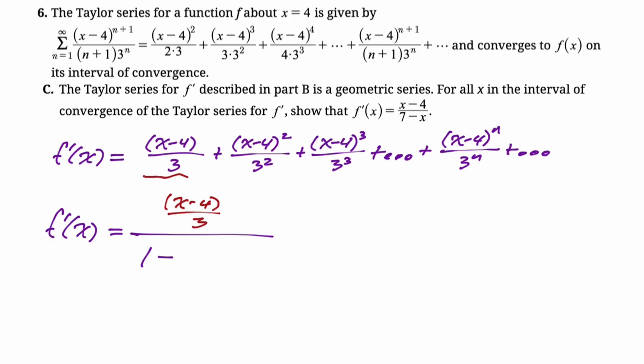You go from the first term to the second term, you have to multiply by x minus 4 over 3. To get from the second to the third, you'd have to multiply again by x minus 4 over 3. So the common ratio is x minus 4 over 3. So we have this, and now this is just an algebra problem. Complex fractions, we're just going to clean this up.